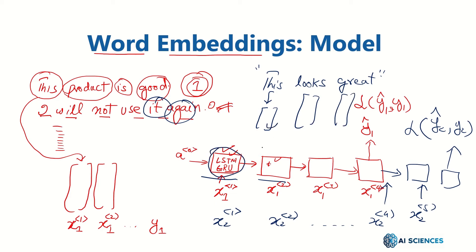We unroll this three times — one for each word — apply the forward pass, and generate a prediction: whether it's 1 or 0 for this particular sentence.